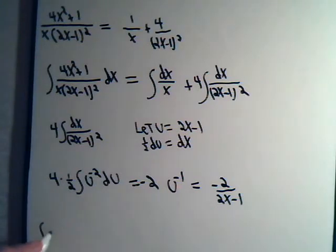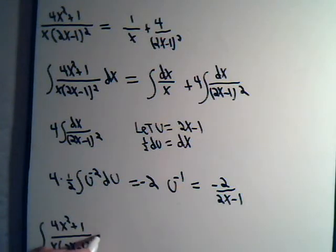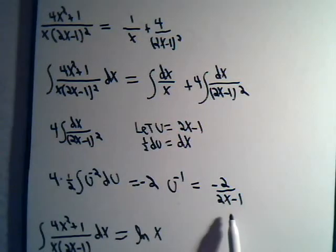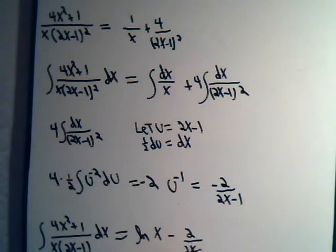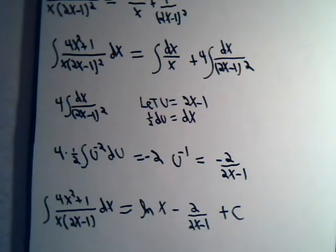So we go back up to here. And we have our integral. 4x squared plus 1 divided by x times 2x minus 1 squared dx equals this integral. The natural log of x. Plus this one which came out to be minus 2 divided by 2x minus 1. Plus an arbitrary constant.